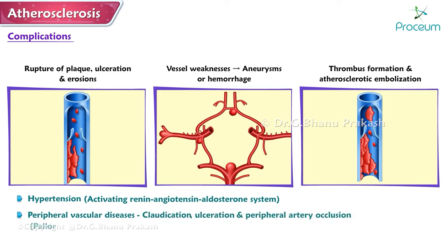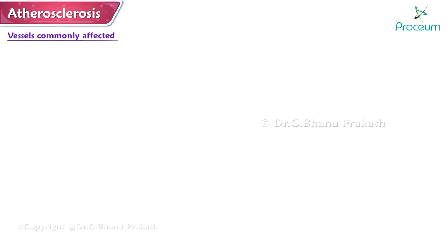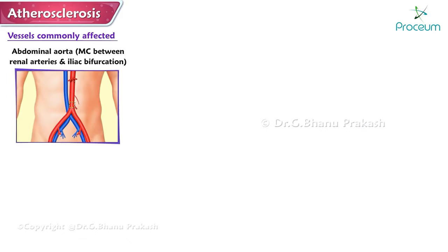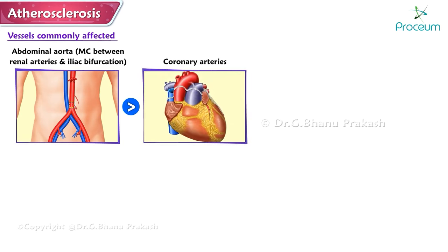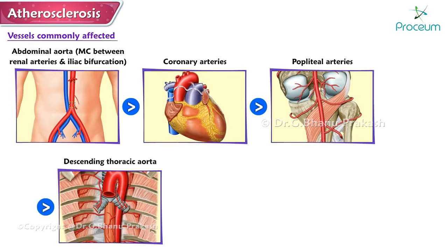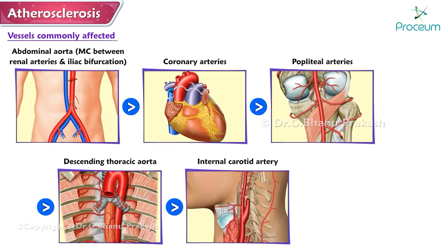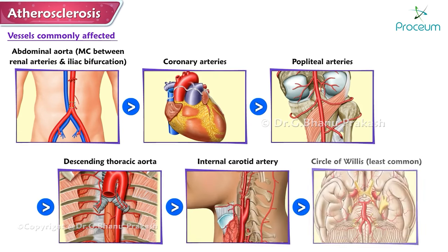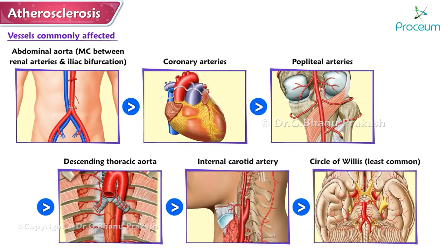Peripheral vascular diseases include claudication, ulceration, and peripheral artery occlusion — presenting with pallor, pain, paresthesia, pulselessness, and paralysis. Vessels most commonly affected by atherosclerosis, in order: abdominal aorta (most commonly in the area between the renal arteries and iliac bifurcation), coronary arteries, popliteal arteries, descending thoracic aorta, internal carotid artery, and circle of Willis (least commonly affected).